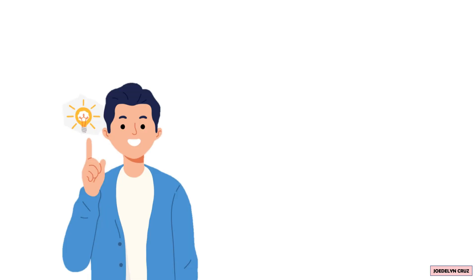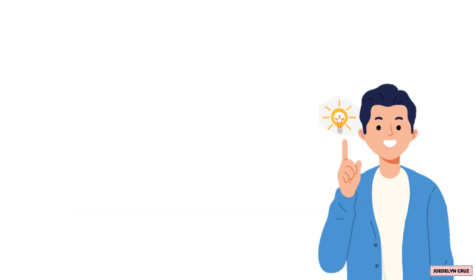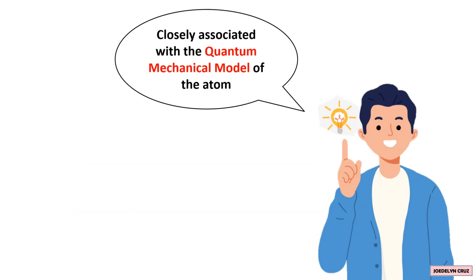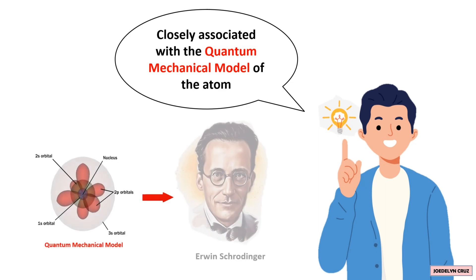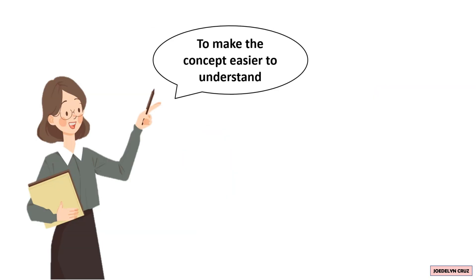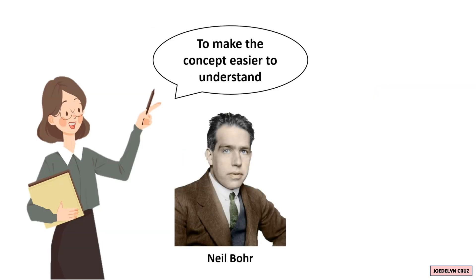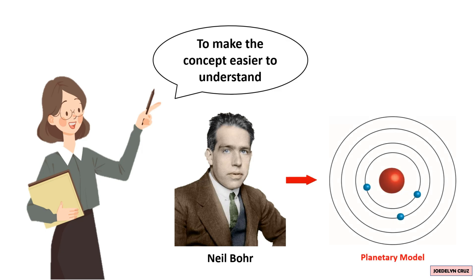The idea of electron configuration is closely associated with the quantum mechanical model of the atom by Erwin Schrödinger. To make the concept easier to understand, let us use Bohr's planetary model to illustrate electron configuration.